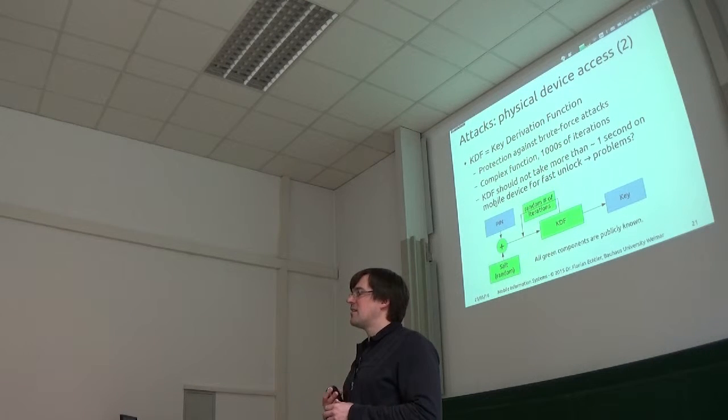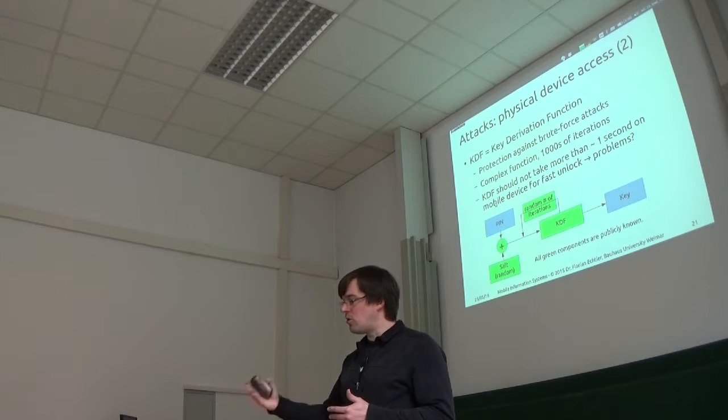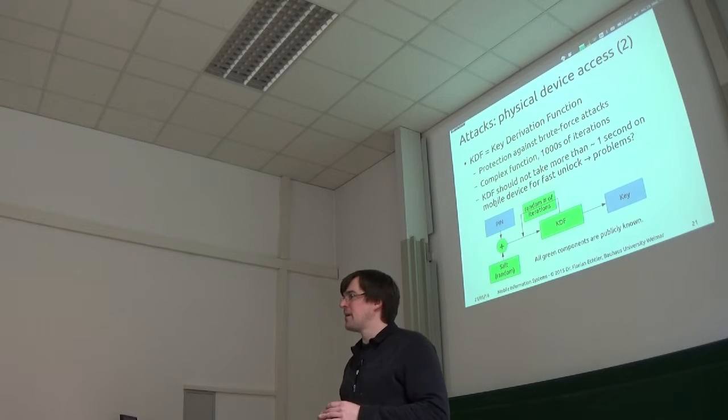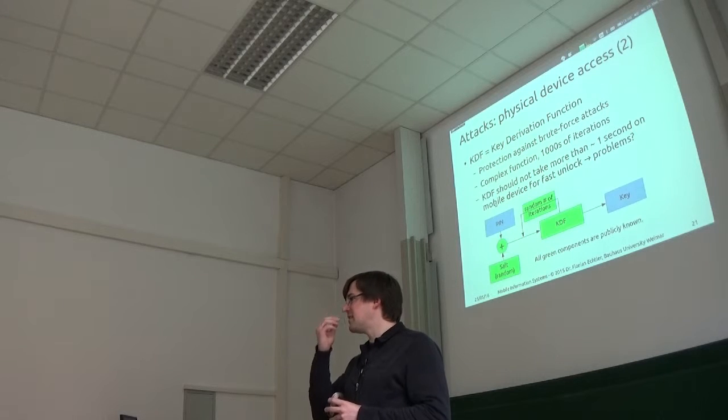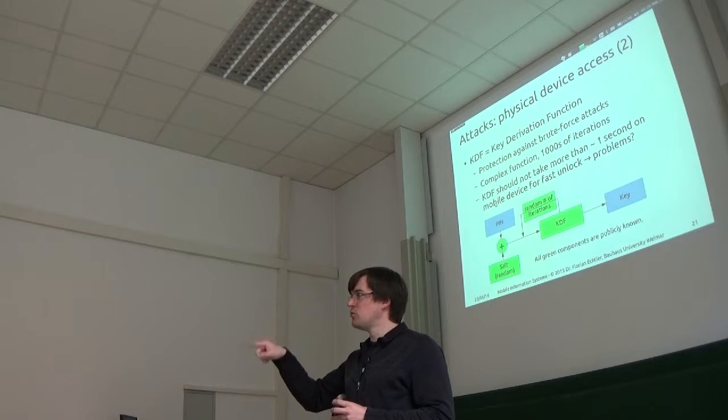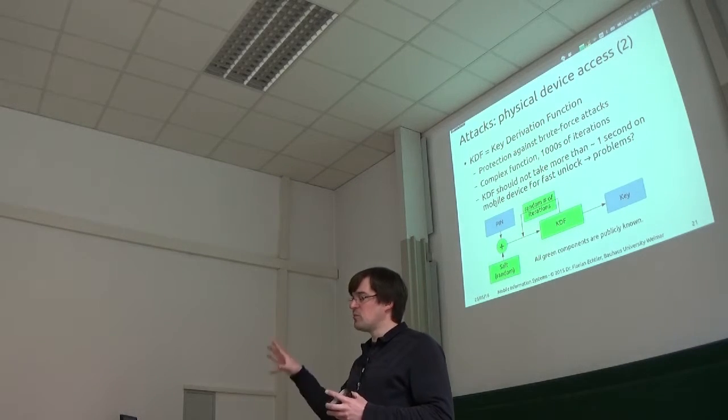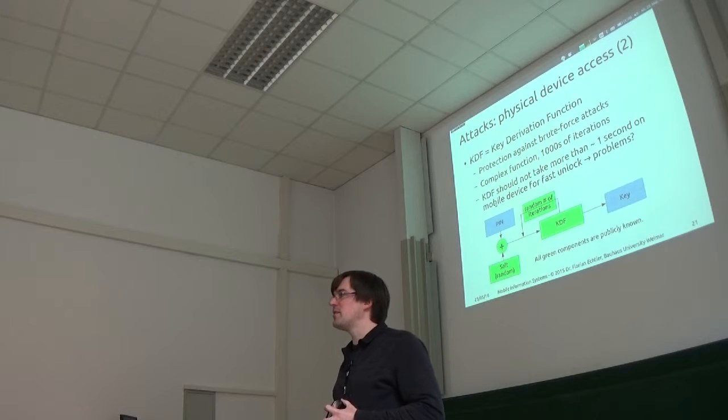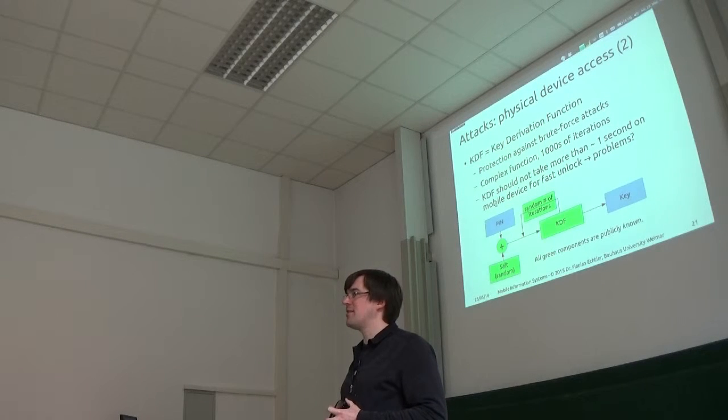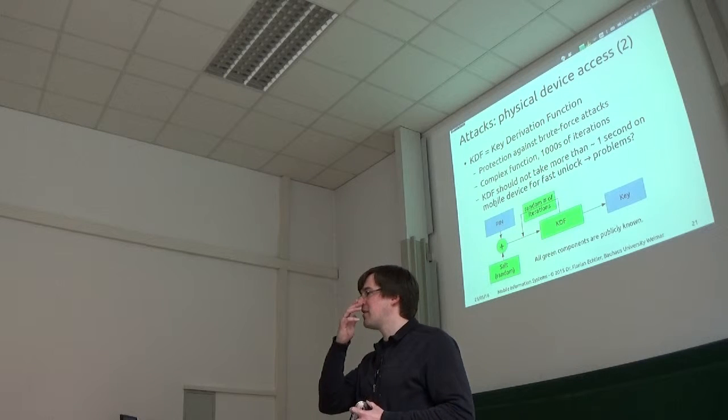But there's again one problem with this. Can you think of what that is? So this loop, for example on iPhones, this loop or this number of iterations is calibrated to last 80 milliseconds. So if we assume now that I have access to all of the memory, even the encrypted one, what is the problem then? Can anyone think of an issue? Well, it's calibrated to take, yeah...